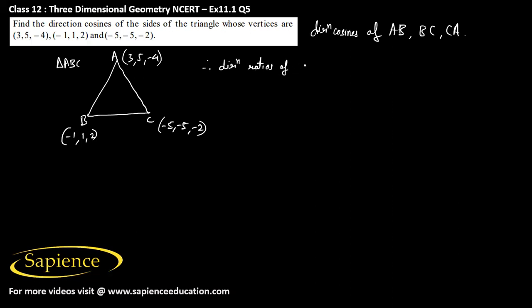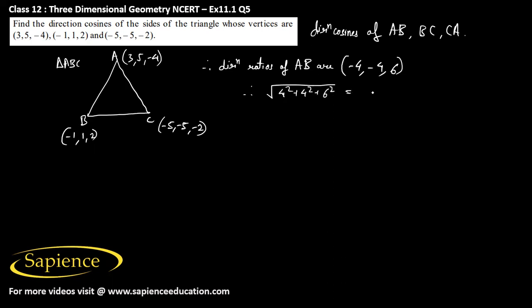Direction ratios of AB are: minus 1 minus 3 is minus 4, then 1 minus 5 is also minus 4, then 2 minus of minus 4 is plus 6. Therefore, we need to find the value of square root of 4 squared plus 4 squared plus 6 squared, that will be square root of 16 plus 16 plus 36, giving square root of 98.